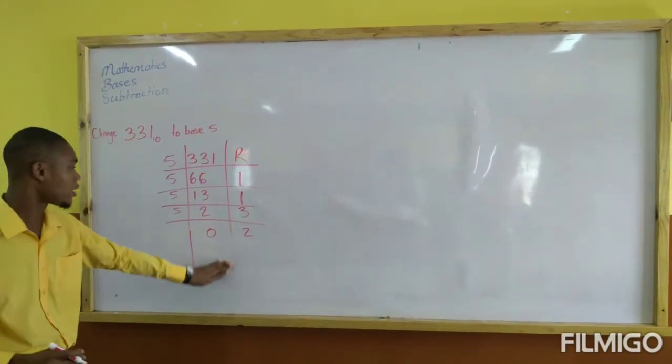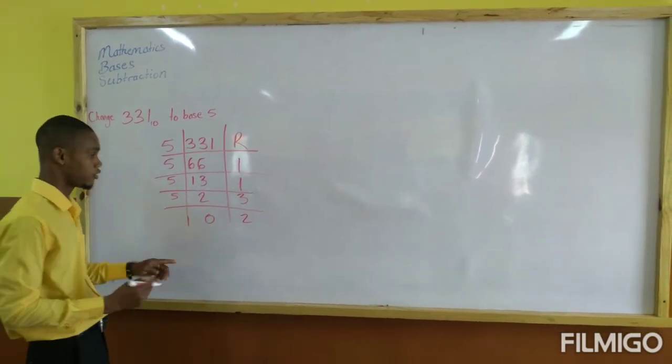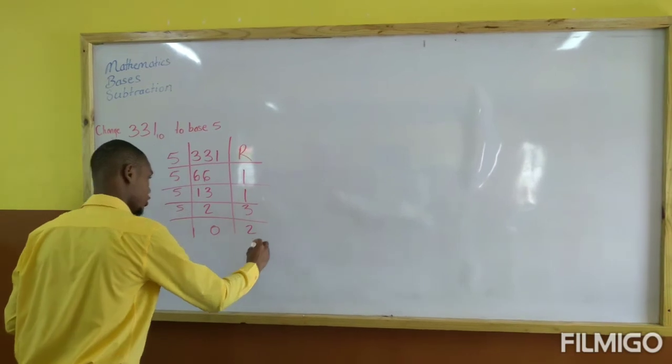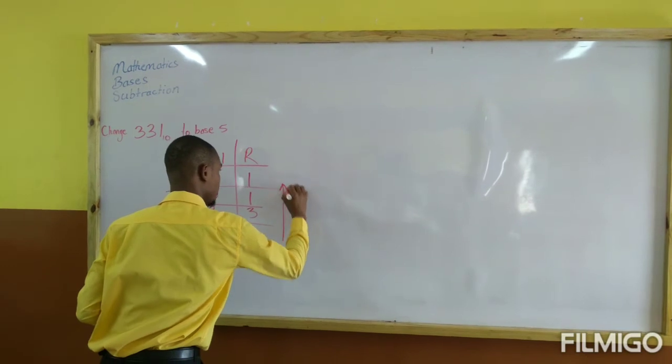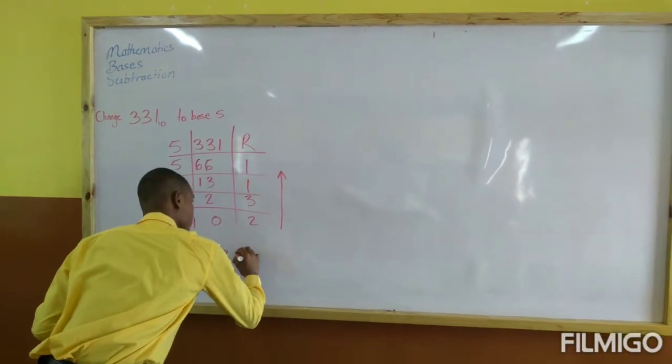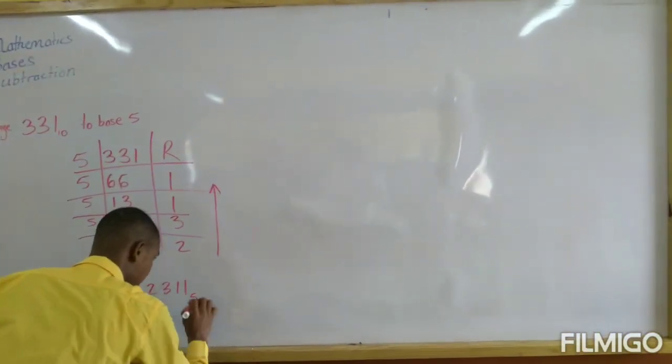Because you have arrived at 0 in the middle, it means you cannot divide any further. So you write your remainders from the bottom going upwards. So that would be 2, 3, 1, 1 base 5.